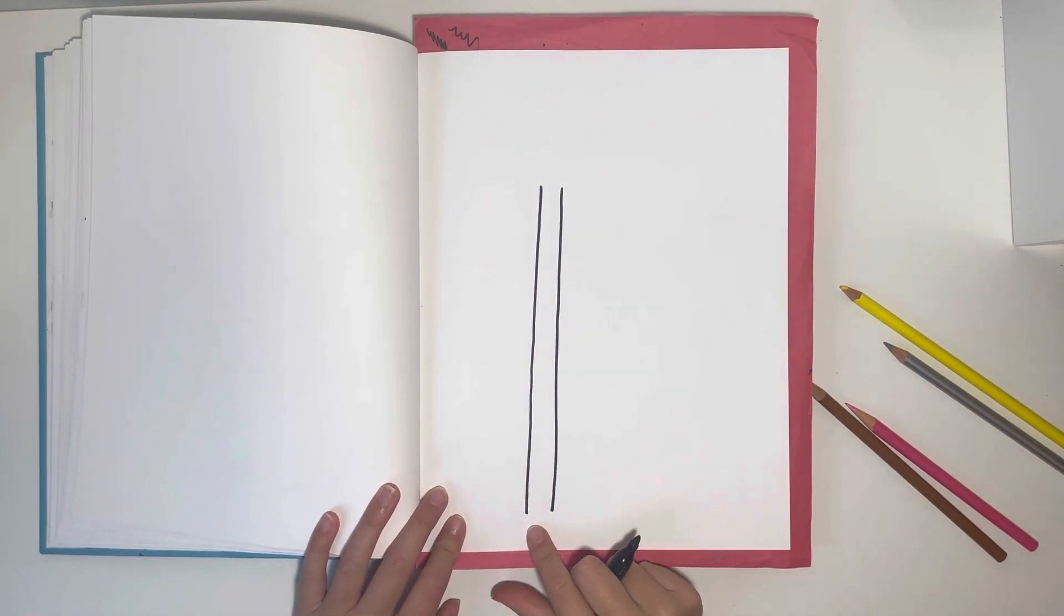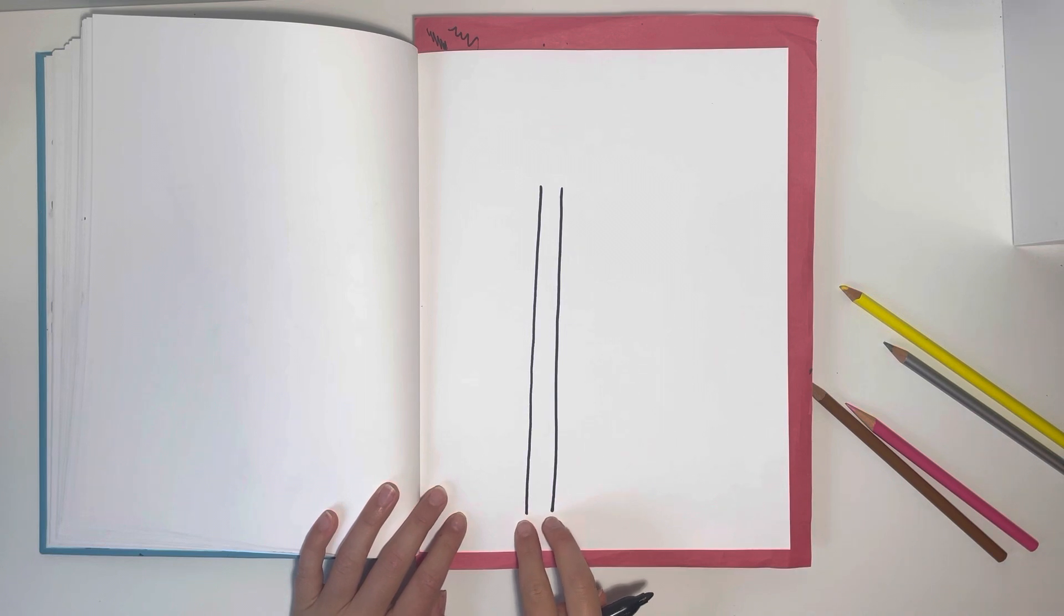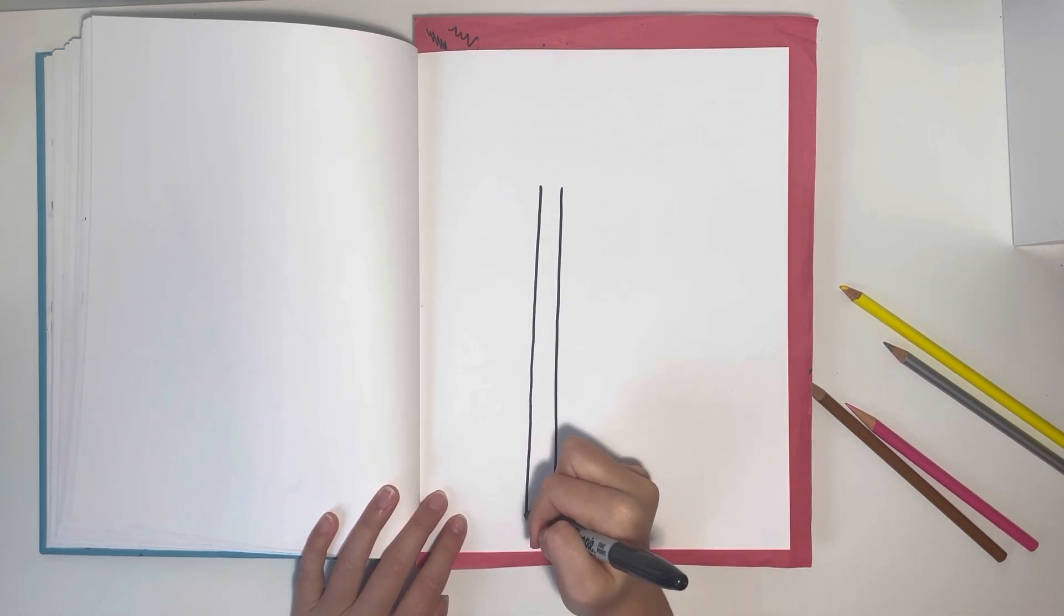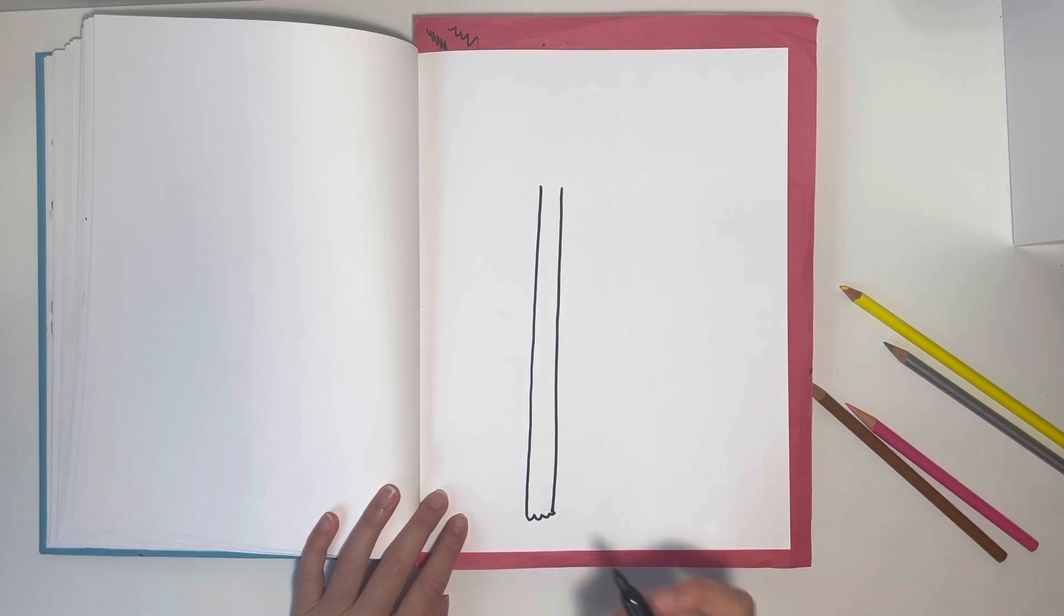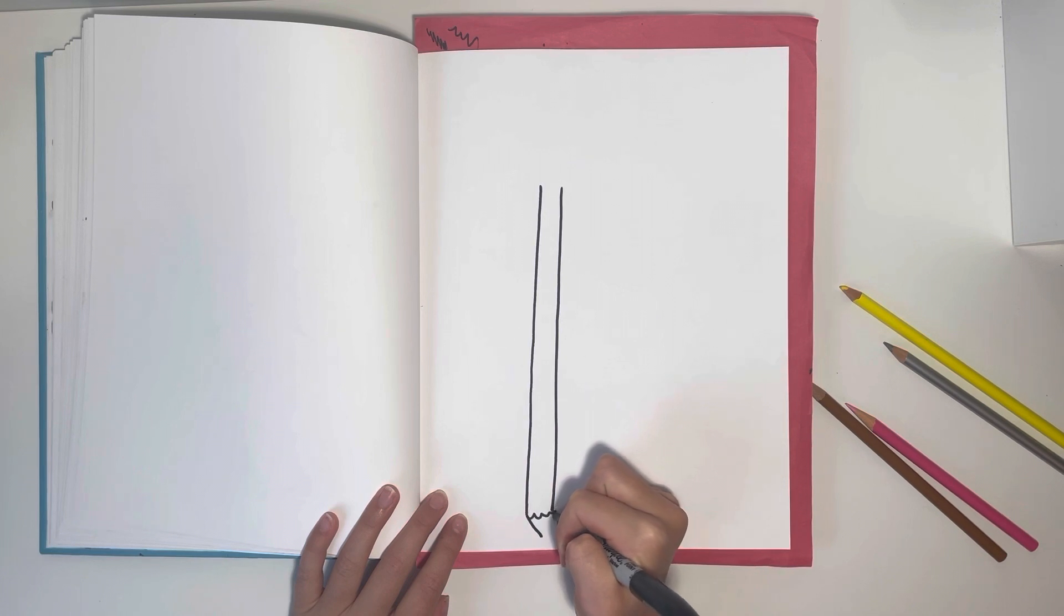Now at my bottom to connect my two lines I'm going to draw a squiggly sort of line and now I'm going to draw kind of a V-shape.